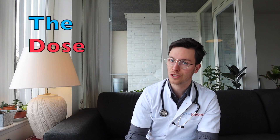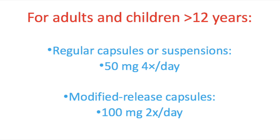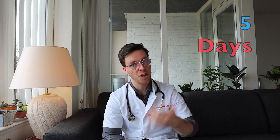Now for the dosages — I cannot give you precise dosages and you should always use the prescribed dosages your doctor gave you, however I can provide some guidelines. For adults and children older than 12 years taking regular capsules or suspensions, the correct dose is 50 milligrams four times a day. When taking modified release capsules, it's 100 milligrams two times a day. Treatment duration is usually five days for non-pregnant women, but seven days for pregnant women or for men. If you've forgotten a dose and it's less than four hours until your next dose, just skip it and take it at the end of your treatment.